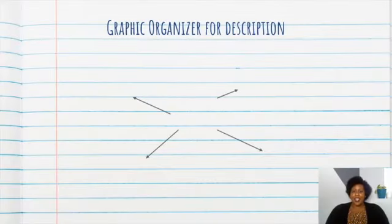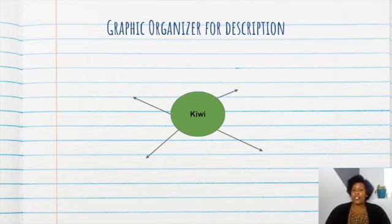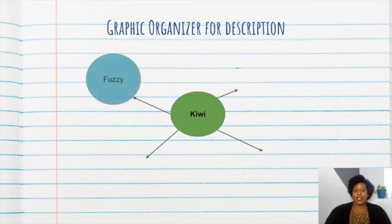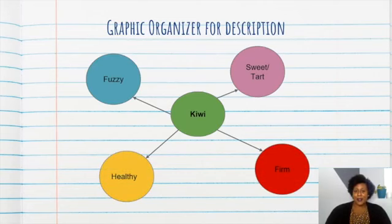Now, for the graphic organizer. Get your pencil and paper ready. Because you may want to write this down to better help you with description text. So, you can draw circles or squares. You can draw as many as you need. But I only did four to help me brainstorm a description for a kiwi. So, that's going to be my topic, the fruit kiwi. I put my topic in the center. And then I begin building the description around it. I'm also going to make sure that I use and reference my keywords when I write out my paragraph. So, a kiwi is fuzzy. It can be sweet and tart sometimes. It can be firm in texture. And, of course, they're healthy for you.